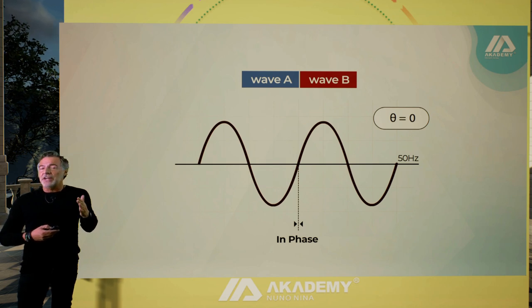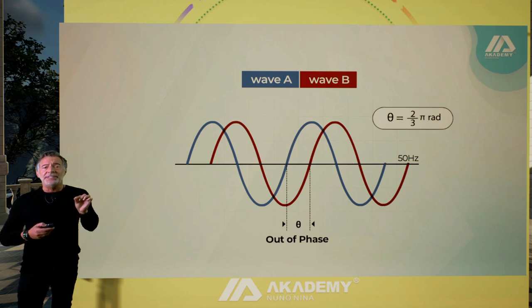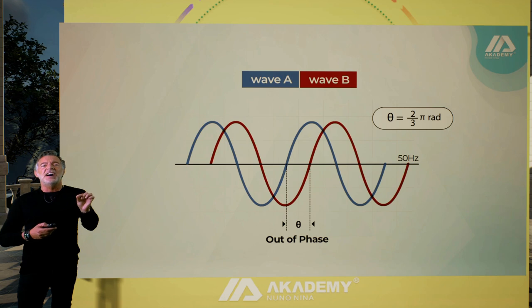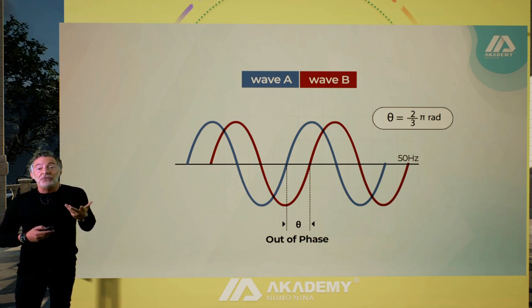we say that the waves are in phase. Okay, so when in the overlap there is a mismatch, we say that they are not in phase, or that they are out of phase.